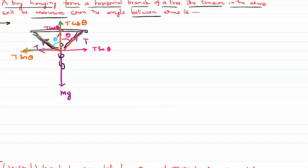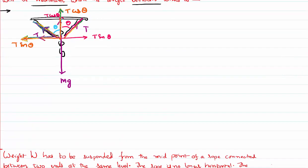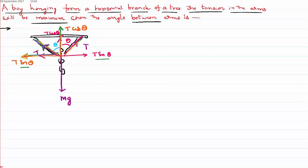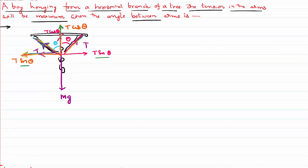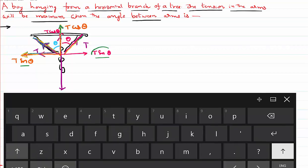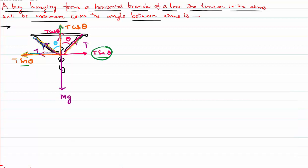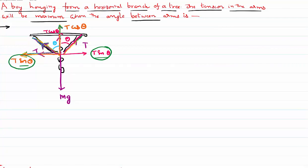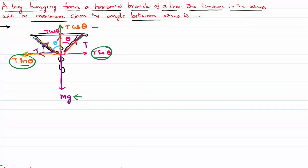Now, the T sinθ from one hand and the T sinθ from the other hand are equal in magnitude but opposite in direction — one acts left and the other right — so they cancel each other. The downward force acting on the boy is simply mg, and the upward forces are T cosθ and T cosθ from each hand.